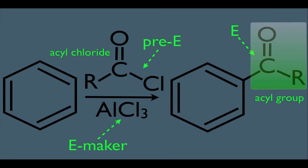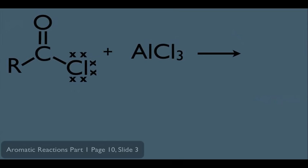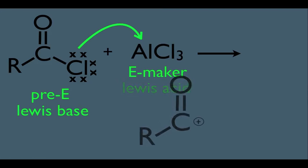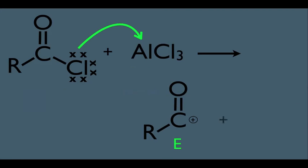In the pre-step, the electrons on the halogen of the acyl chloride move towards the Al in AlCl3. The acyl chloride donates the electrons, making it the Lewis base, and AlCl3 is the Lewis acid. The result is that the acyl group becomes a full-fledged electrophile, and AlCl4⁻ is generated as a byproduct.